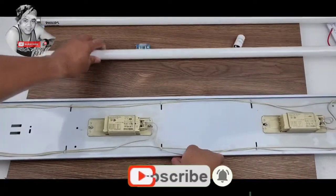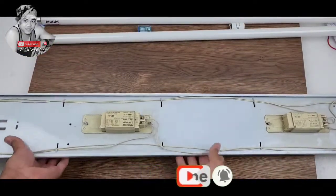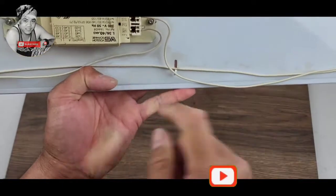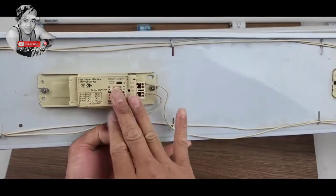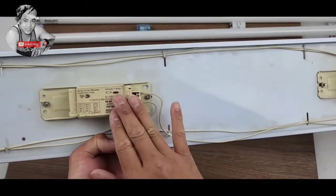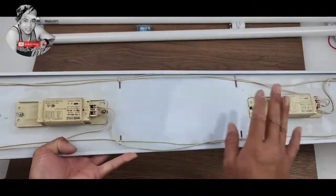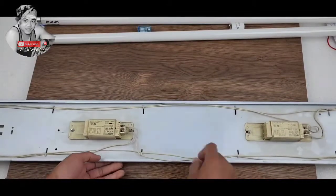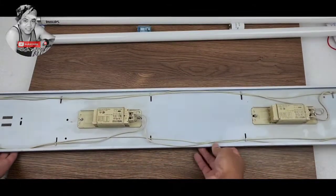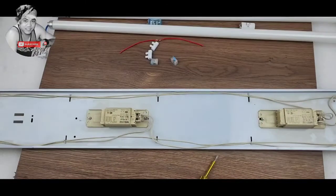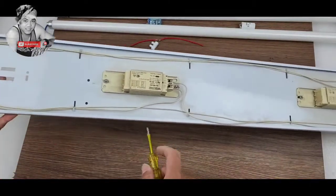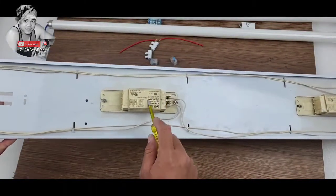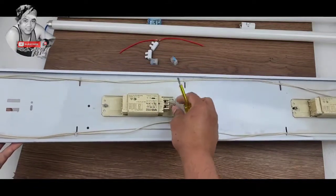We have these two ballasts or chokes or starters, this is 220. We don't need this one to connect now. Both sides we will remove and we will install the new system of LED tube light. So here we go, all we have to do is remove this first choke or ballast or transformer.